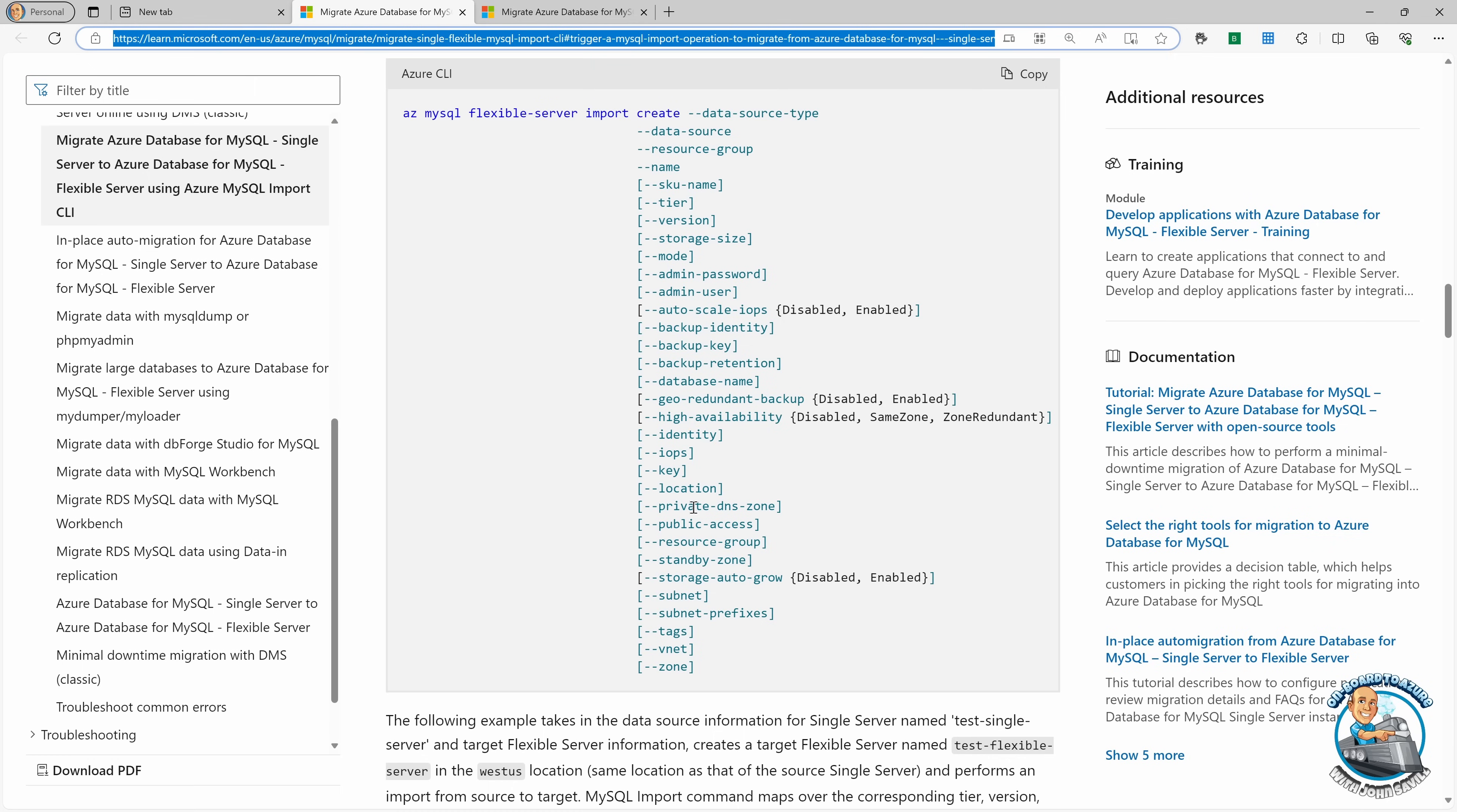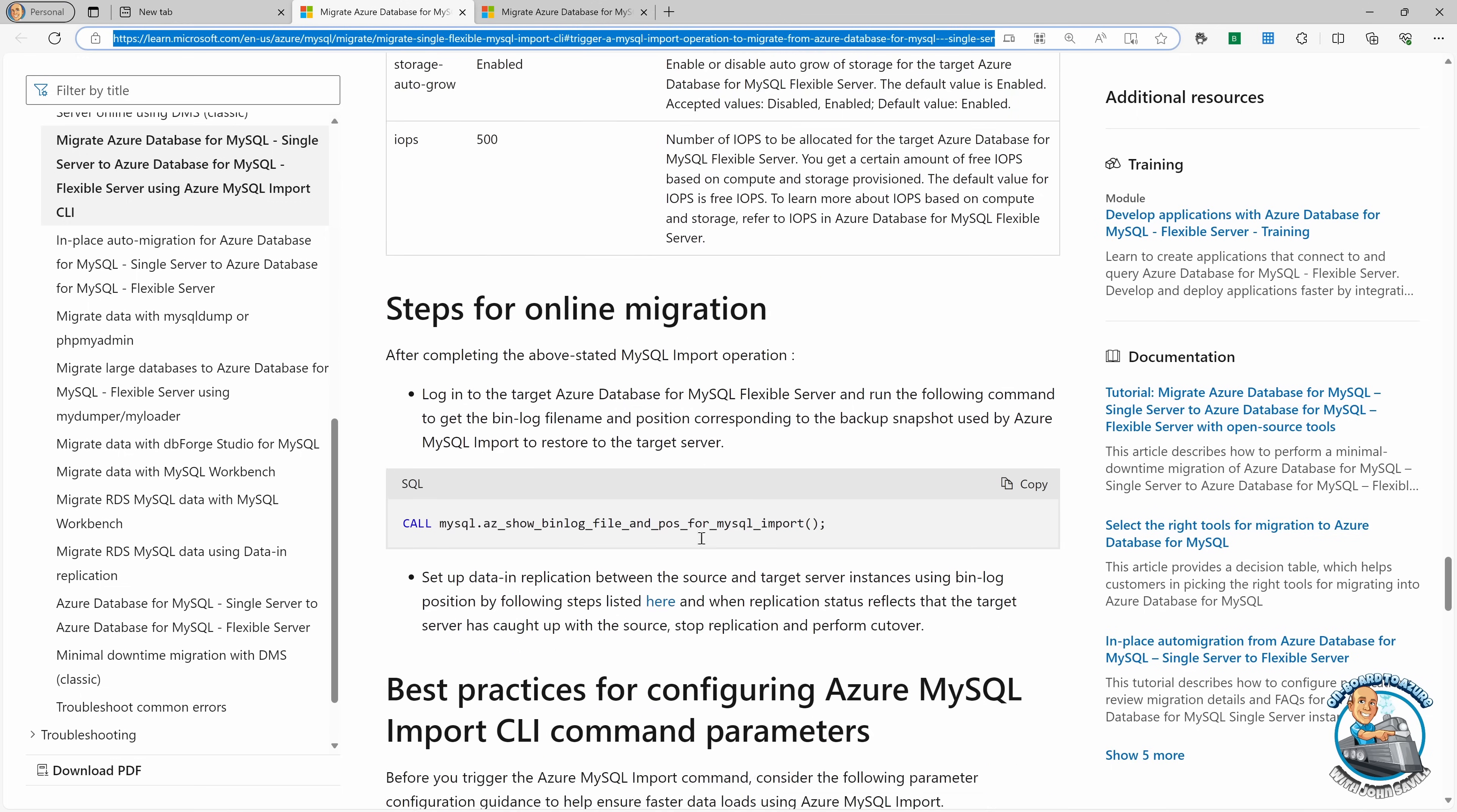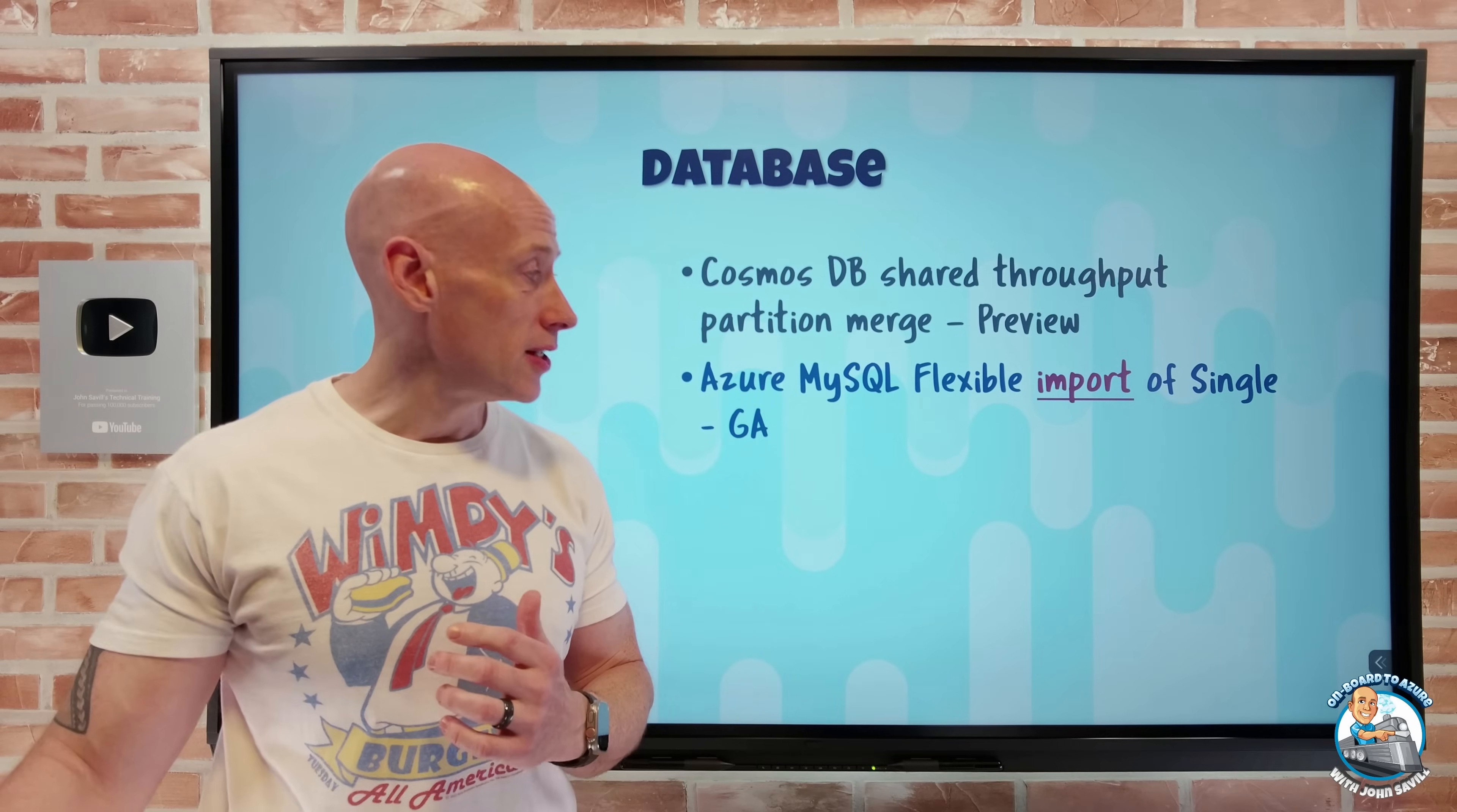And it does support the schema, the data, the login input. I can get the compatible firewall rules from the single into my flexible. There is also a near zero downtime migration, where there's kind of an offline input and then replication. But for that near zero, the documentation talks about it. There is an additional step. You have to then run this additional command as well. But hey, I can totally do that.